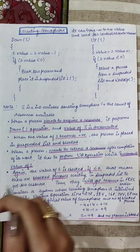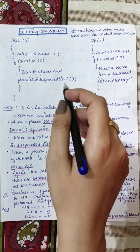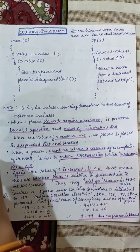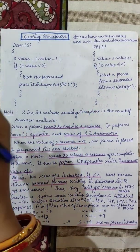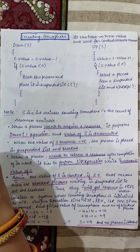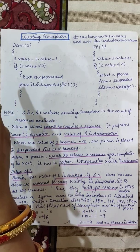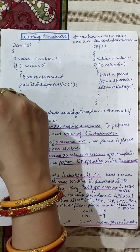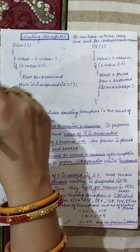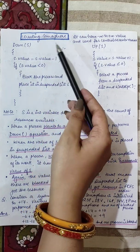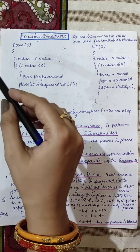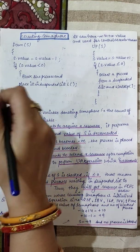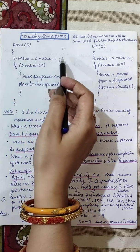This is the code for counting semaphore. Counting semaphore for controlled way में limited resources को share कराने के लिए use होता है — value minus infinity से plus infinity तक हो सकती है. Semaphore variable S integer type का variable है और यह mutually exclusive way में access होता है. S, number of resources को denote कर रहा है — suppose मेरे पास किसी चीज़ के 10 resources हैं. जो process आता है वो down operation perform करेगा, यानि S की value को minus 1 कर देगा, तो अब हमारे पास 9 होगी.